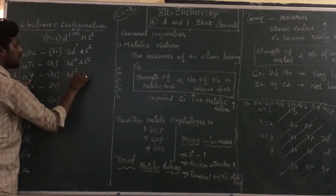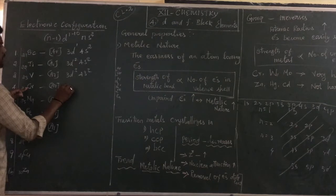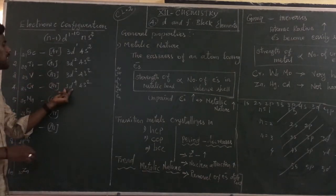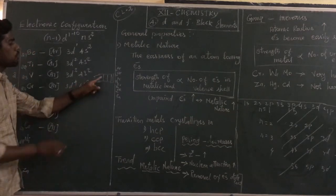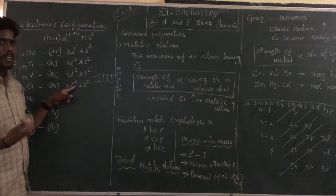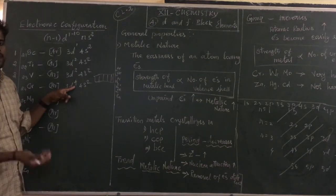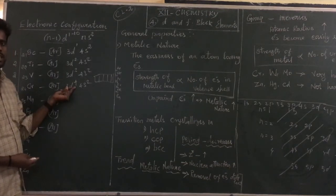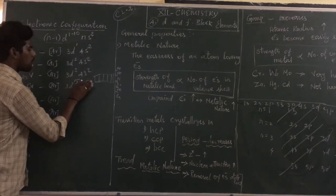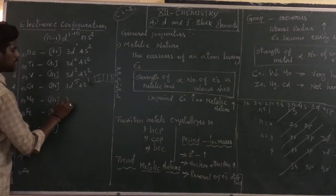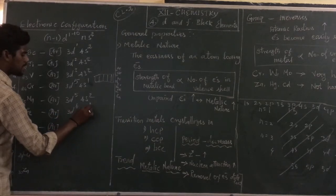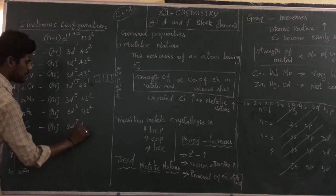However, chromium has an exceptional electronic configuration. Instead of [Ar] 3d⁴ 4s², chromium is [Ar] 3d⁵ 4s¹. This is because a half-filled d-orbital (3d⁵) is highly stable in nature. The half-filled electronic configuration gives extra stability, so one electron from 4s is promoted to 3d.